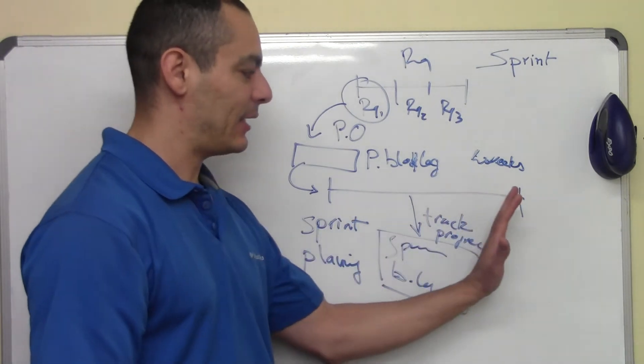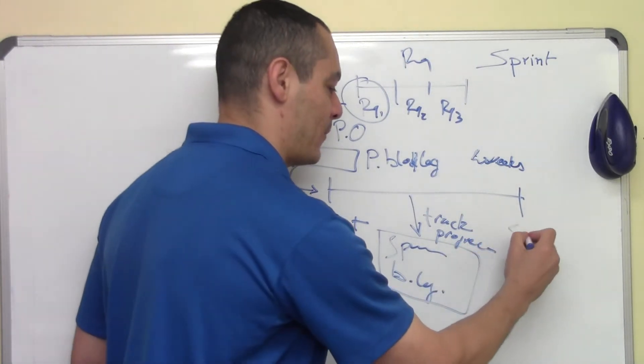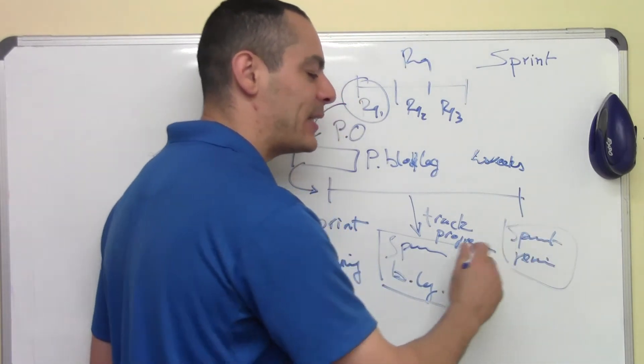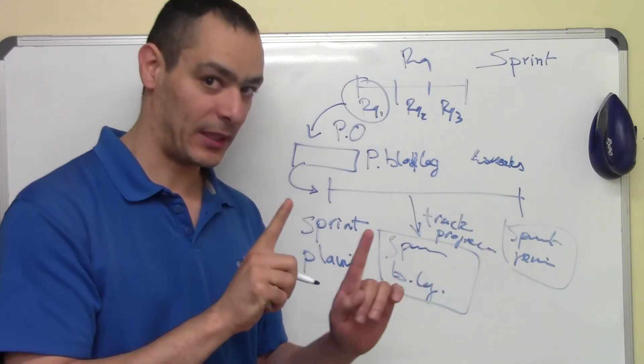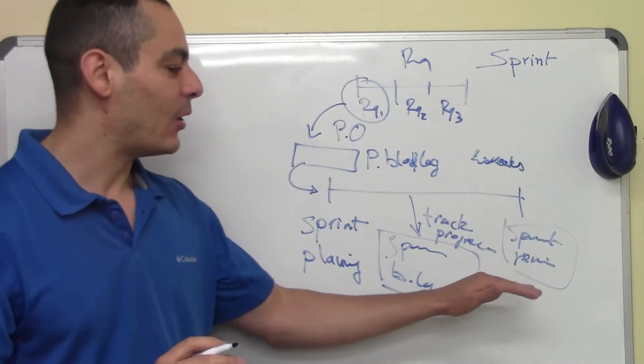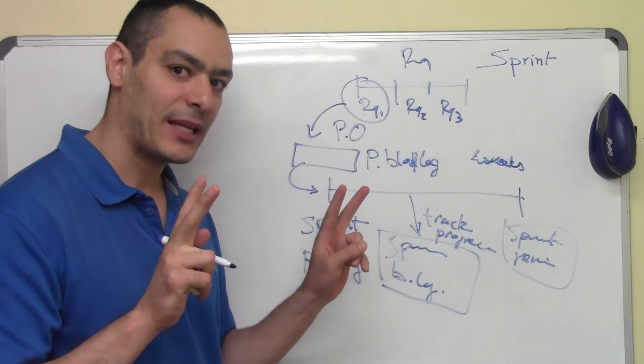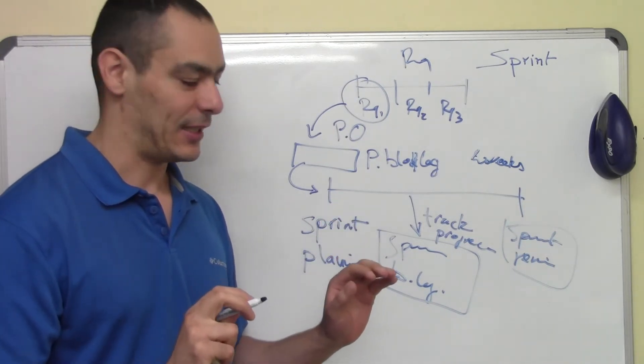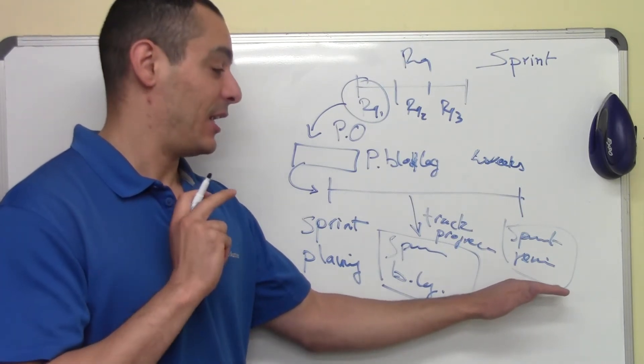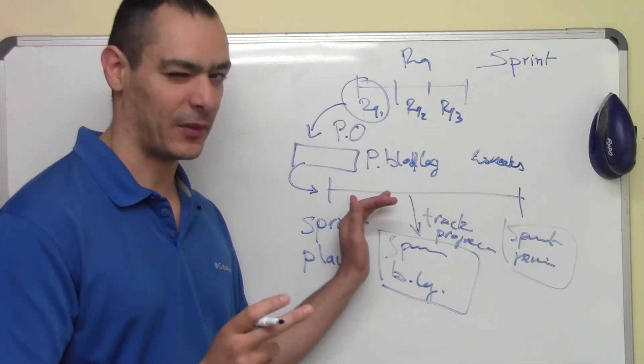When the job is done, at the end, the team will do what we call the Sprint review. The Sprint review is basically just a meeting, very short meeting, not fancy with PowerPoint or something else, very simple. The goal is to understand what we have done as positive things and what we have to avoid. But never emphasize on criticize. Never criticize anyone. Just to see what was good and what has to be improved.